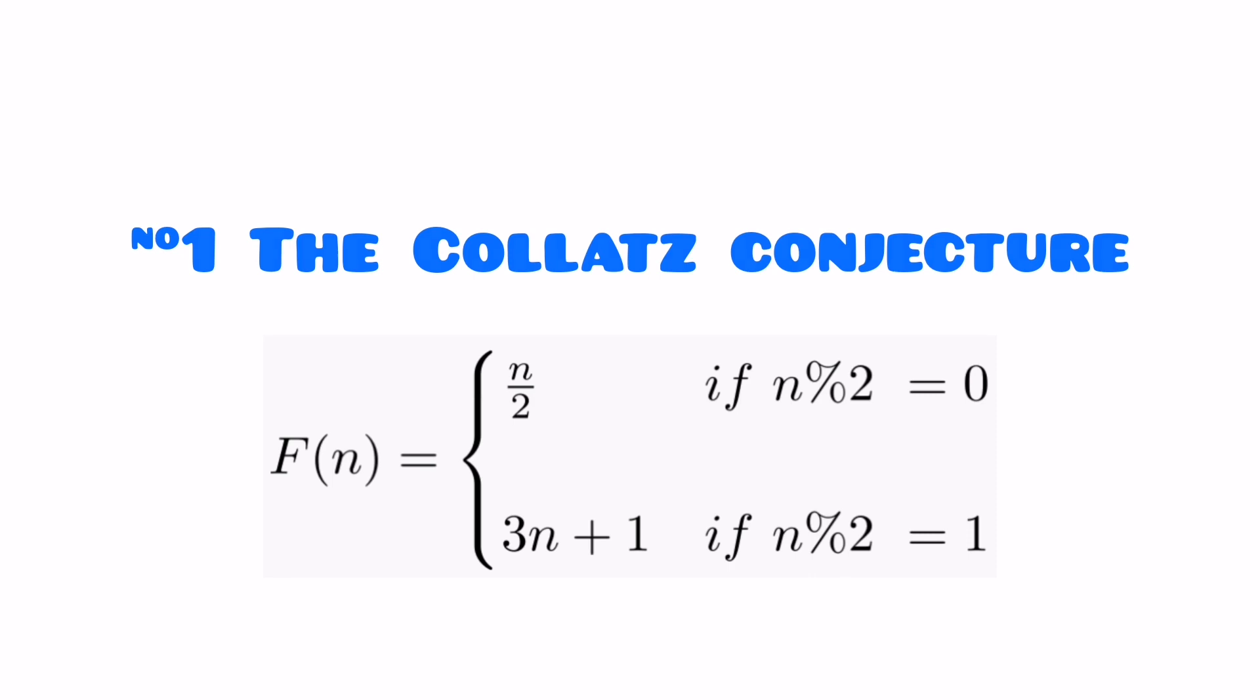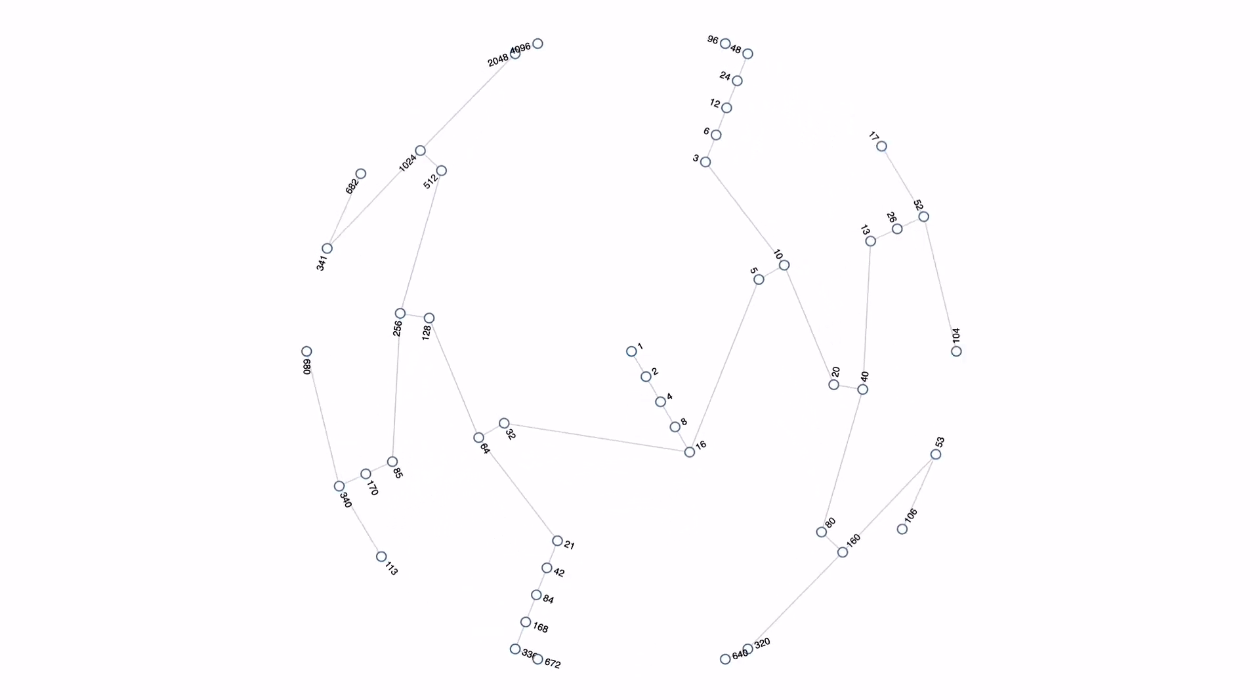Pick any number. If the number is even, divide it by 2. If it's odd, triple it and add 1. Take that new number and repeat the process, again and again.